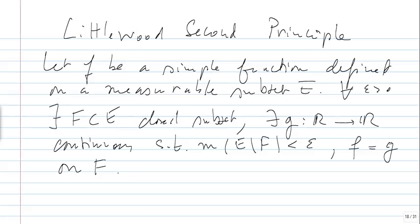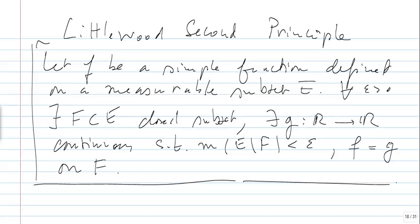This is known as Littlewood's second principle — it tells you that a simple function can almost be approximated by a continuous function. More precisely, 'almost' doesn't mean F is close to G in value; rather F equals G exactly on F, and F is chosen as close as you want to E in measure. It is almost continuous on the entire E.